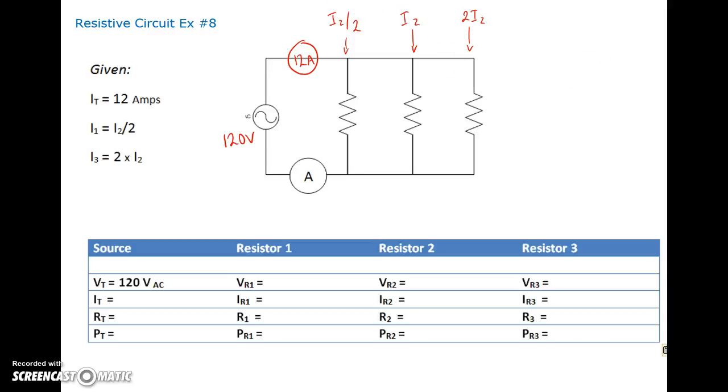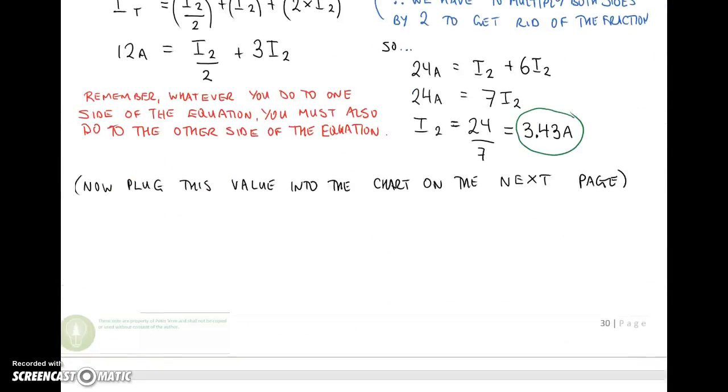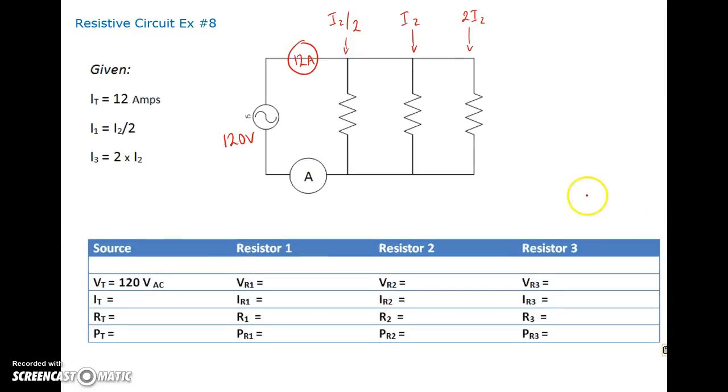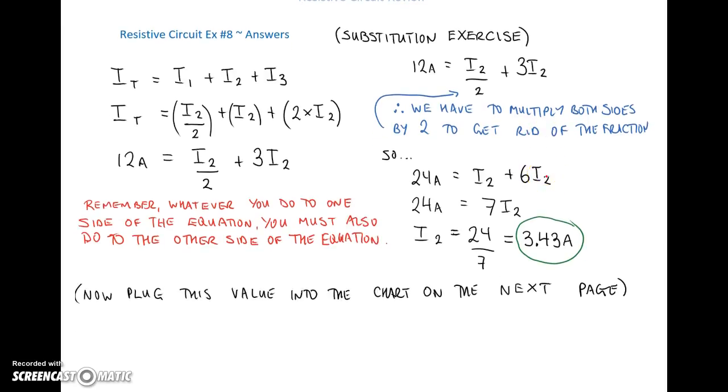What I'm going to do is I'm just going to scroll down here and show you the calculations. So if we have IT is equal to I1 plus I2 plus I3, and we drop in each of the individual values. So the first current is I2 divided by 2. This stays the same because everything is in terms of I2. And the third current is double what I2 is.